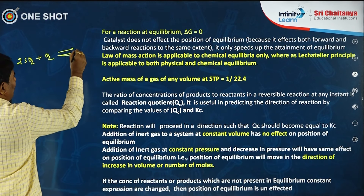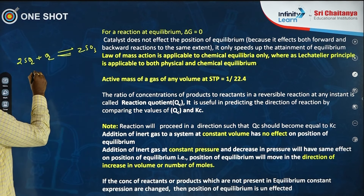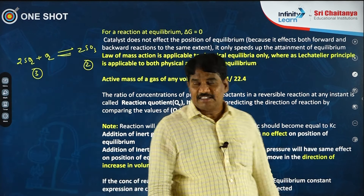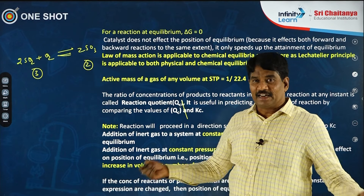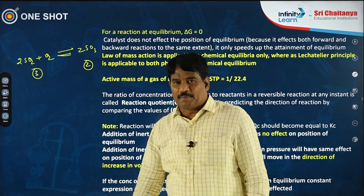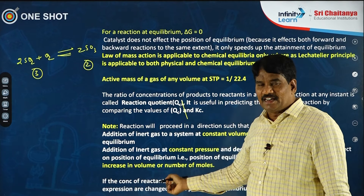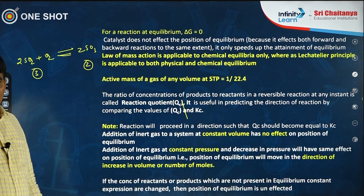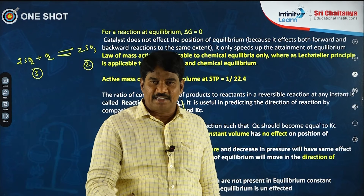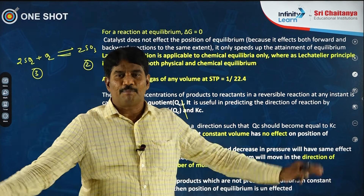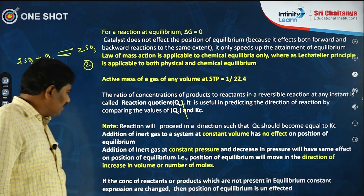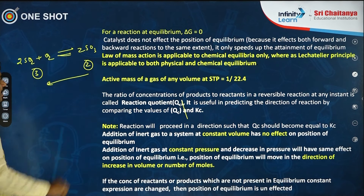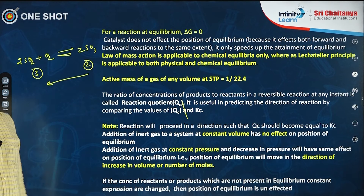For 2SO₂ + O₂ ⇌ 2SO₃: reactant side has 3 moles, product side has 2 moles. Adding inert gas at constant pressure causes equilibrium to shift toward more moles — the backward direction (favoring 3 moles over 2). So equilibrium shifts left. Note: at constant volume, adding inert gas would have no effect on equilibrium.